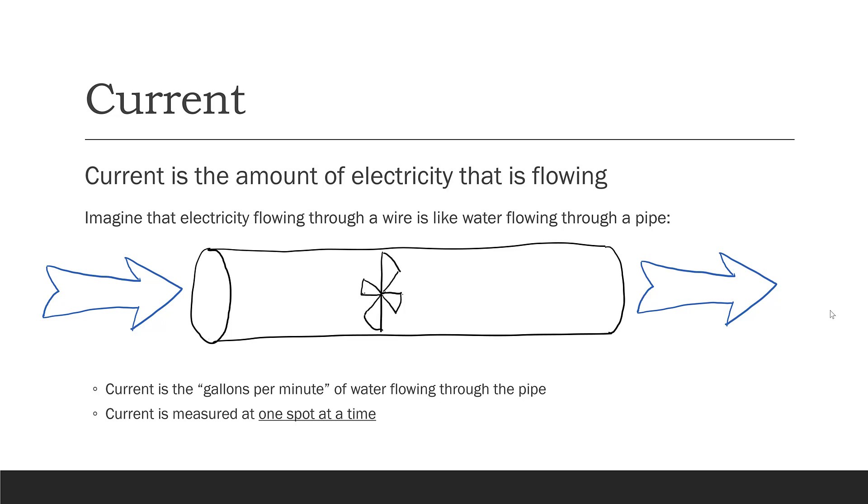Current is always measured at one spot at a time. We could insert a little flow meter into our pipe and measure the flow at that particular spot, wherever the flow meter was inserted. So, that's what current is—it's the amount of electricity that's flowing. The unit of current is the ampere, usually called the amp and abbreviated with an A.